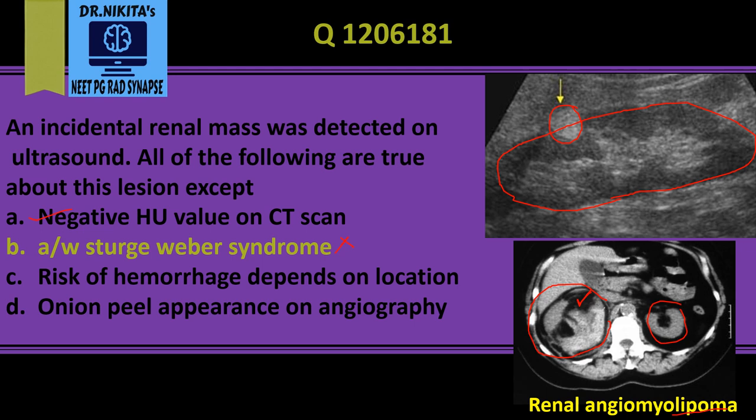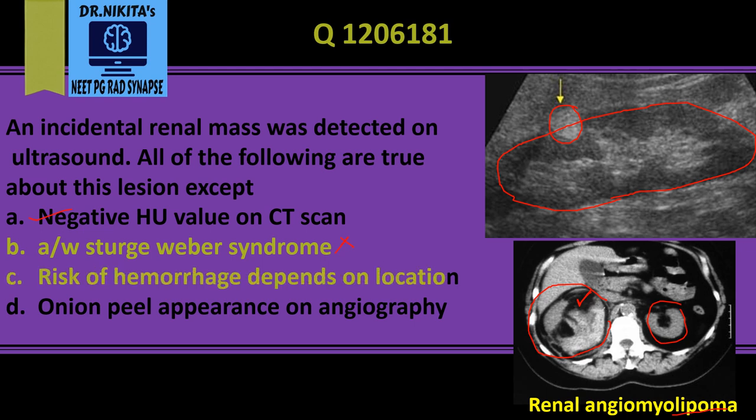If a renal angiomyolipoma is large — more than four centimeters — it can bleed and cause shock, which becomes an emergency requiring treatment with embolization. The risk of hemorrhage depends not on location but on size of the lesion: more than four centimeters.